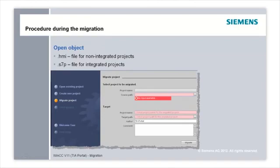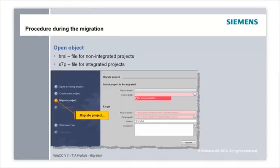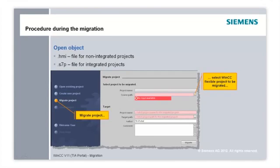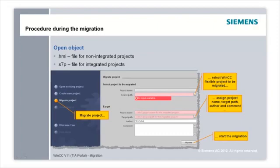How to realize a migration? You can migrate WinCC Flexible standalone projects to WinCC version 11 as well as WinCC Flexible projects integrated in Step 7. In the WinCC version 11 portal, you choose the action Migrate Project. Then you specify the source path of the Step 7 or WinCC Flexible project, as well as the target path for the migrated project. Press the Migrate button to migrate the project to WinCC version 11.